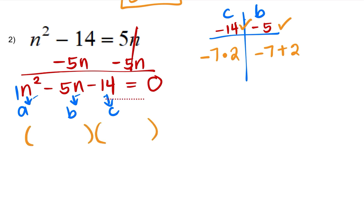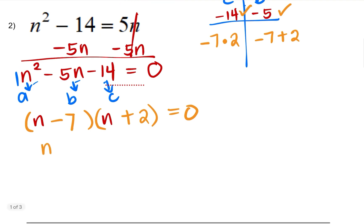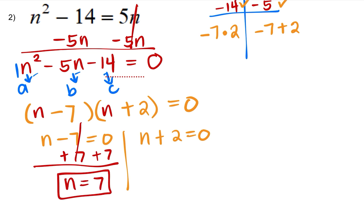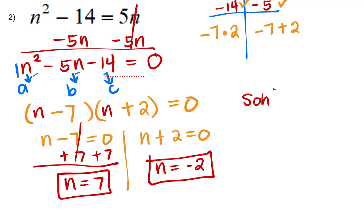We can set up our factors. N squared is equal to N times N, and then using the factors we found, that's minus 7 and plus 2, giving us N minus 7 and N plus 2. We isolate the variable N by itself: N minus 7 equals 0, and N plus 2 equals 0. Taking the inverse: N equals 7 and N equals negative 2. So the solution for this problem is negative 2 and 7.